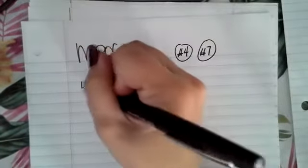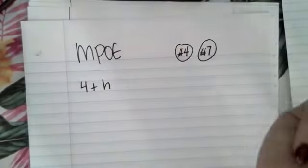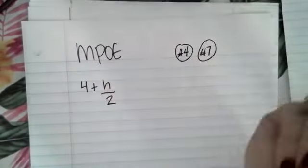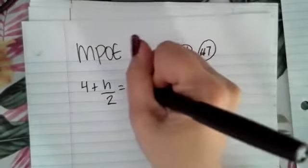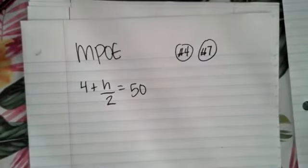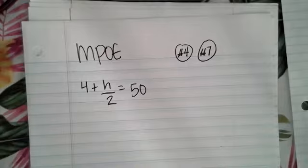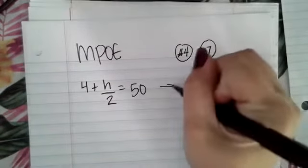So we're going to look at this problem here. We're going to do 4 plus H divided by 2 equals 50. So this is kind of a weird, what we would call a weird equation. If you want, you can rewrite this equation like this.